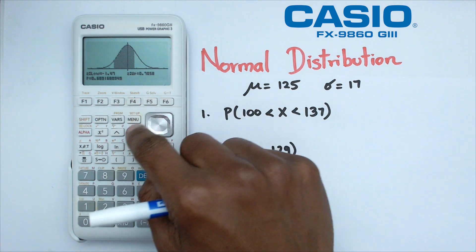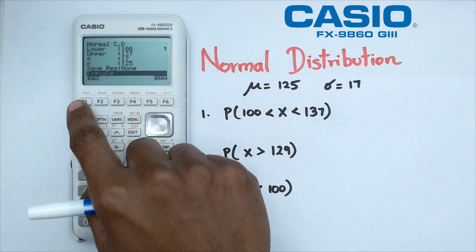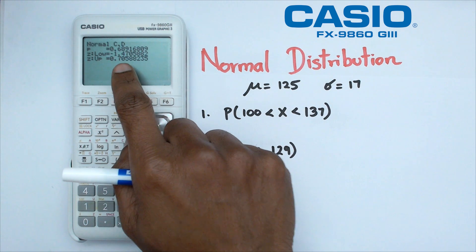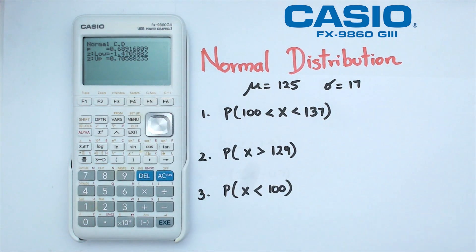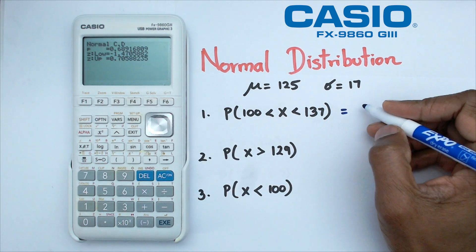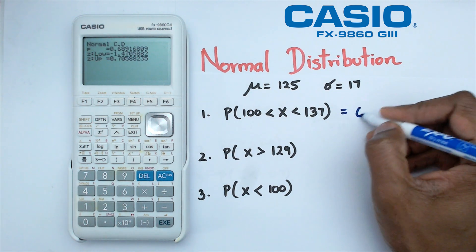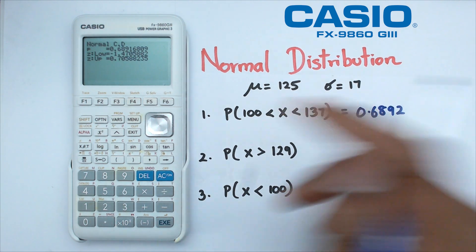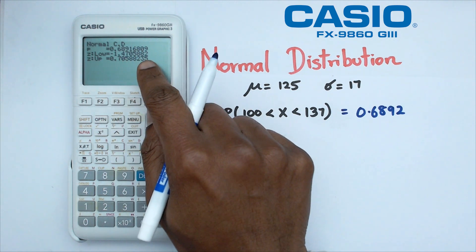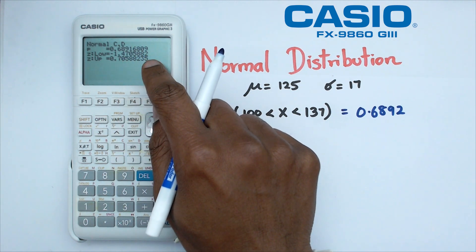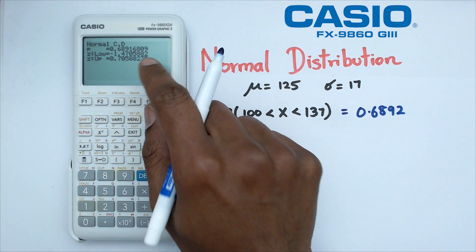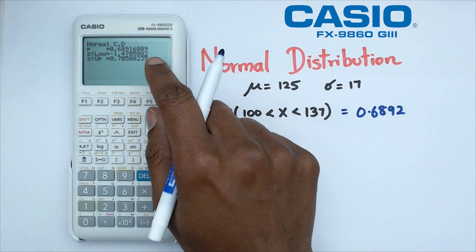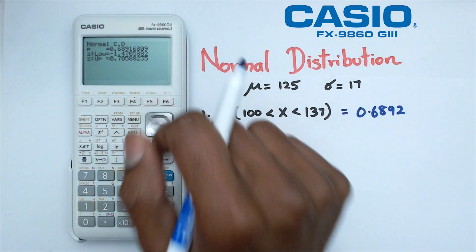Now, of course, with the probability, if it's too tiny for you, you could always just click on F1, which is calculate, and you can see what the probability is. So in this case, the probability is 0.6892. Now, what you'll notice is that it actually gives you the Z scores as the lower and upper limit. So if you do need those Z values in your exams, you can just take that down from here as well.